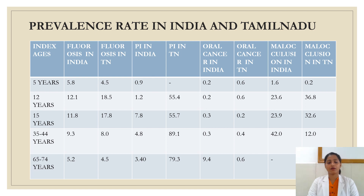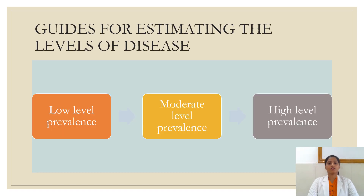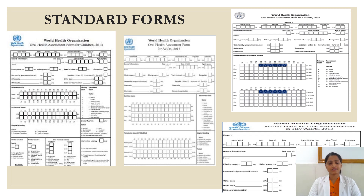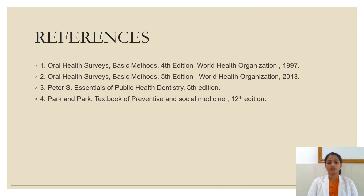Looking at the prevalence rate in India and Tamil Nadu, based on the surveys shown, there are various index age groups and various rates of prevalence. There are three levels of prevalence given by WHO: low level, moderate level, and high level. The WHO Oral Health Assessment Form — available for children and adults — was issued in 2013 as a modified version. We usually record this WHO proforma for all basic surveys or prevalence studies. These are the references which can be used: the National Oral Health Survey Manual, Siebel Peter's book, and Park and Park's textbook.